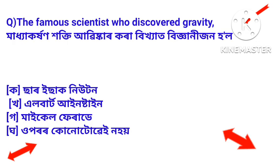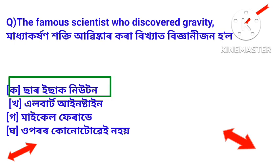Next question: the famous scientist who discovered gravity. Maidha kor hon hokti abishkar kora vikhyat vigyan izan hol? Answer: Sir Isaac Newton. Sir Isaac Newton namor vikhyat vigyan iza ne prun pathame maidha kor hon hokti abishkar kori sil.